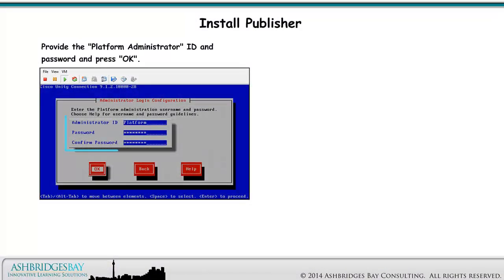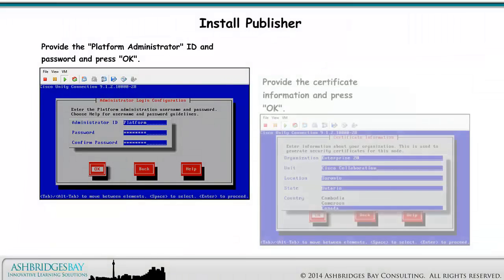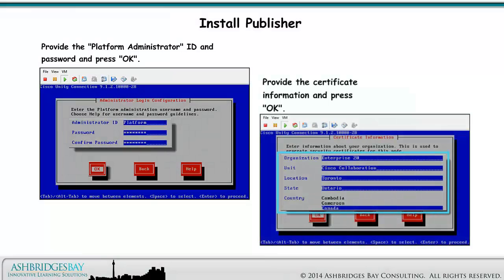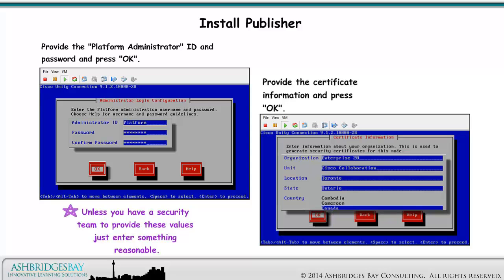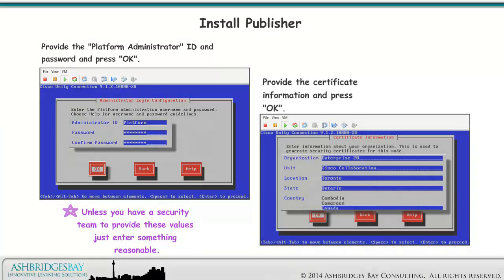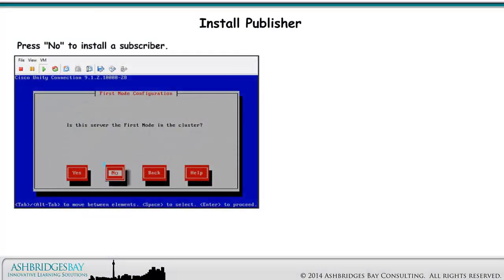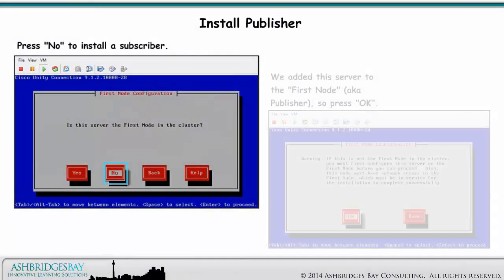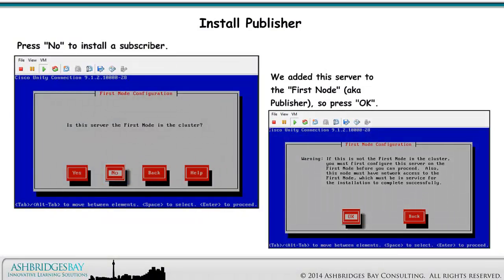Press OK. Provide the platform administrator ID and password and press OK. The platform administrator has access to the console and the OS administration and disaster recovery web pages. Provide the certificate information and press OK. Unless you have a security team to provide these values, just enter something reasonable. Press No to install a subscriber. We added this server to the first node — also known as the publisher — so press OK.